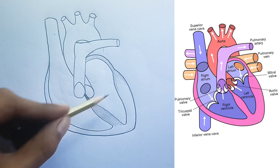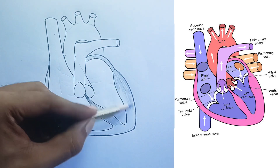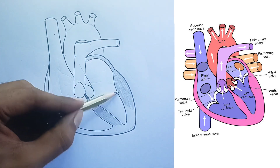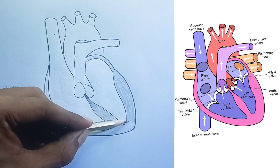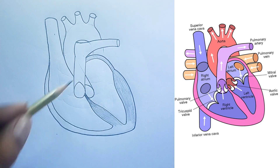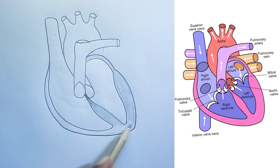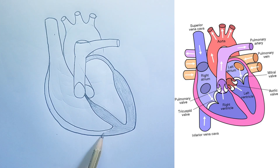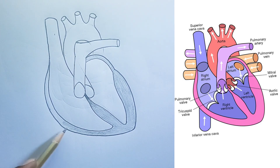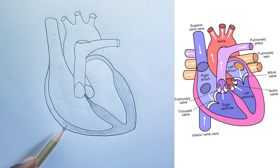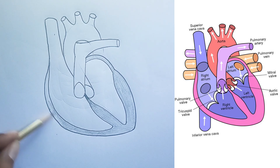Oxygenated blood returns from the lungs to the left atrium via the pulmonary veins. From the left atrium, blood passes through the mitral valve into the left ventricle. The left ventricle, being the strongest chamber, contracts forcefully, pumping oxygenated blood through the aortic valve into the aorta, which then distributes it to the entire body.